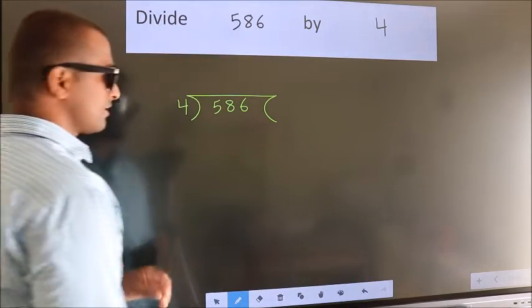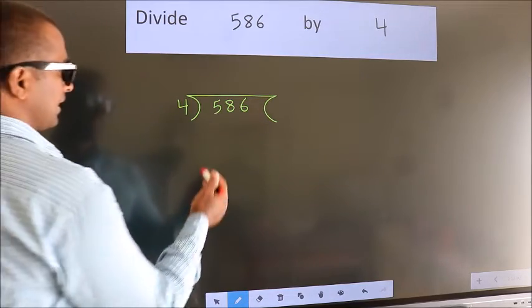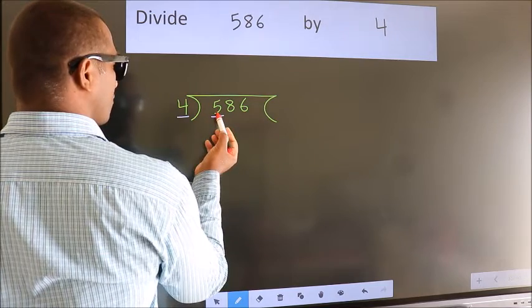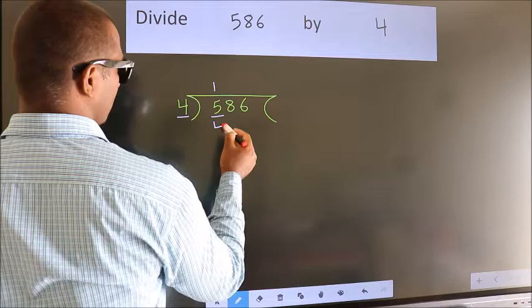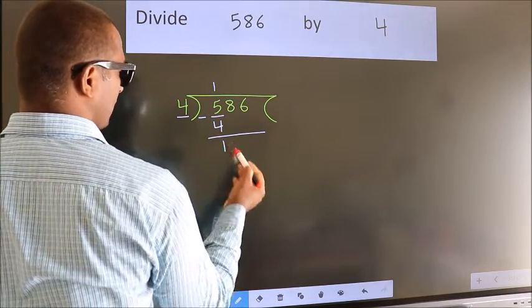This is your step 1. Next, here we have 5, here 4. A number close to 5 in 4 table is 4 once 4. Now we should subtract. We get 1.